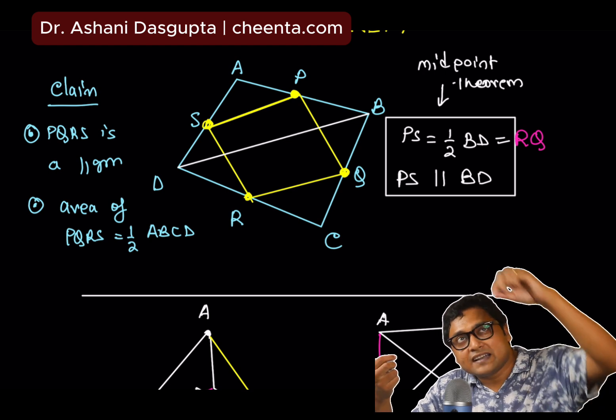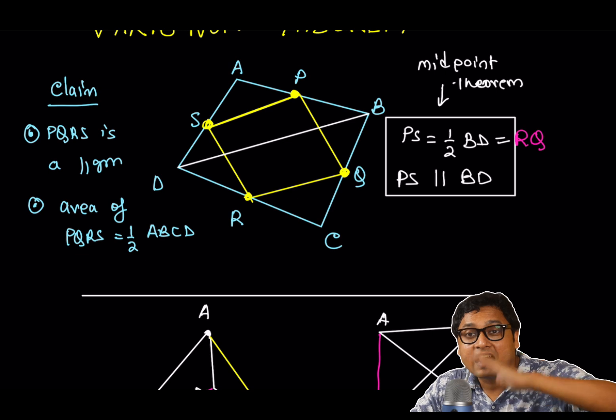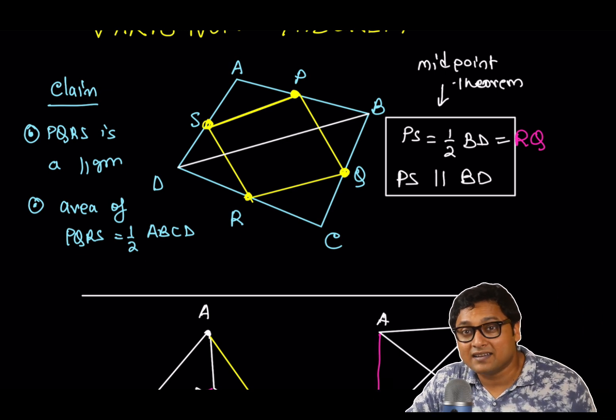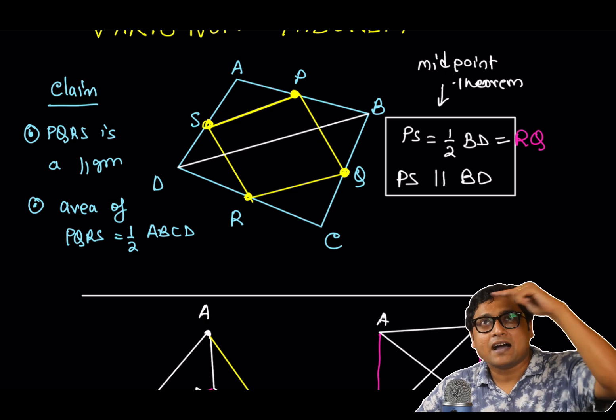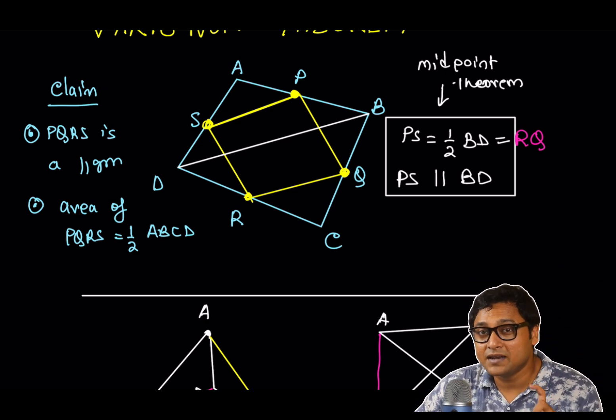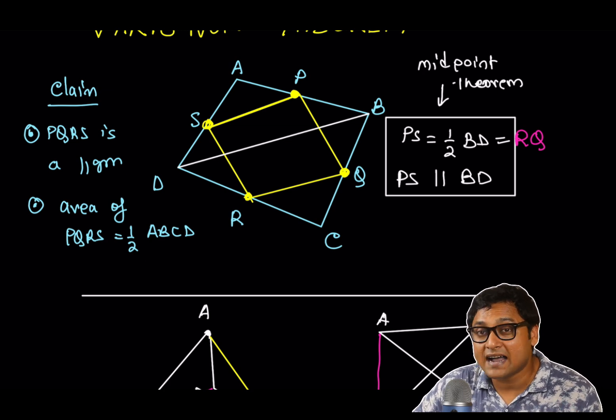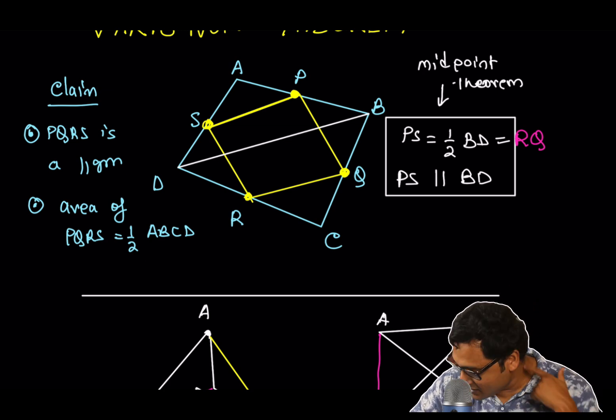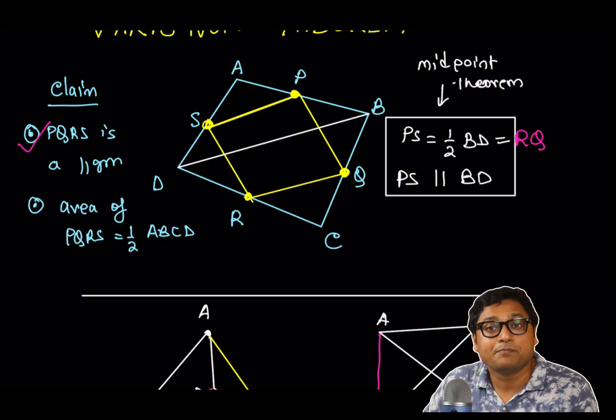So, we found that in PQRS, one pair of opposite sides are equal and parallel. That makes it a parallelogram. That's a theorem, right? If you have any quadrilateral where a pair of opposite sides are equal and parallel, they will be a parallelogram. That particular quadrilateral is a parallelogram. So, we proved the first claim that PQRS is a parallelogram.